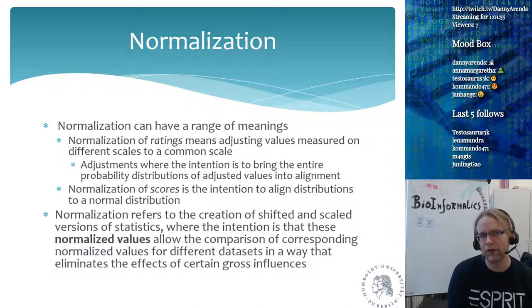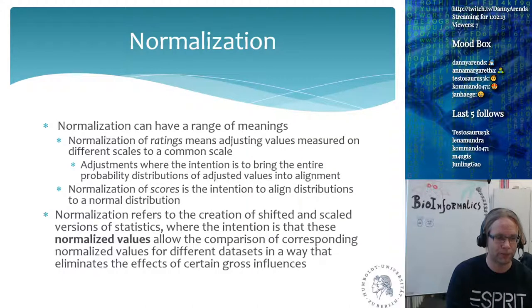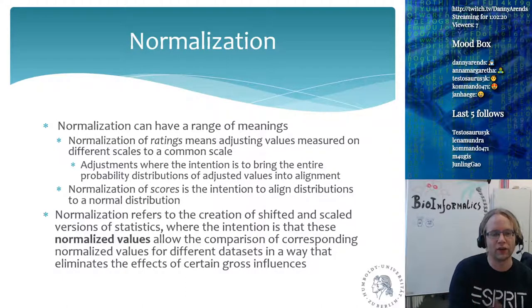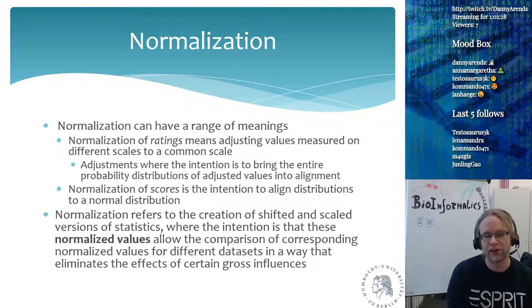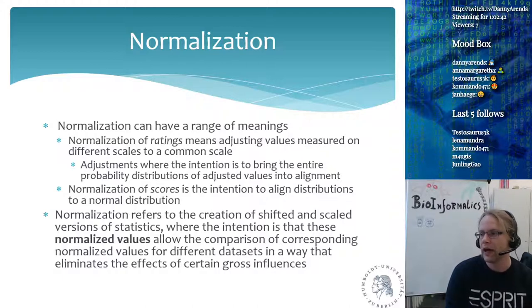Generally in microarray normalization, you first normalize scores to a normal distribution, then normalize ratings across arrays to make all distributions more or less the same. Normalization is shifting and scaling original values so that normalized values allow comparison across datasets, eliminating certain massive influences. In microarrays, score normalization is the log2 transformation of intensity values, and rating normalization is done by quantile normalization.